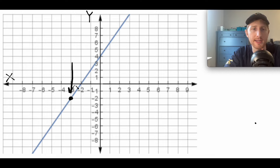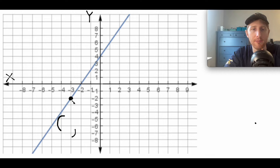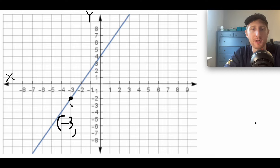Here's another point on the line — what are its coordinates? We always put the X coordinate first. Starting at the dot and looking toward the X axis, the X coordinate is negative 3. Looking toward the Y axis, the Y coordinate is negative 2. So the answer is (negative 3, negative 2).